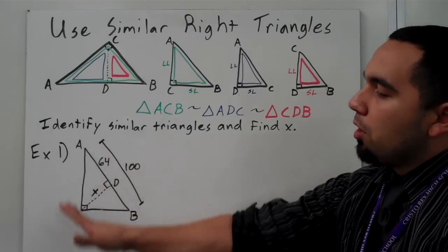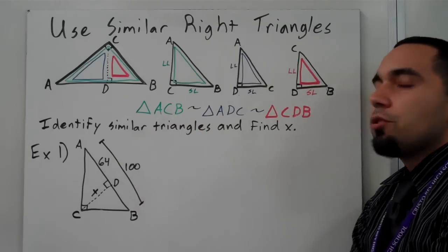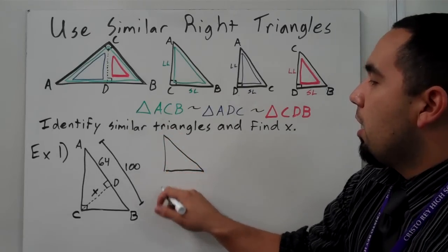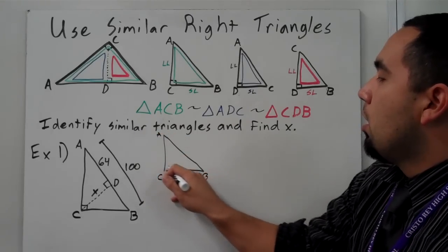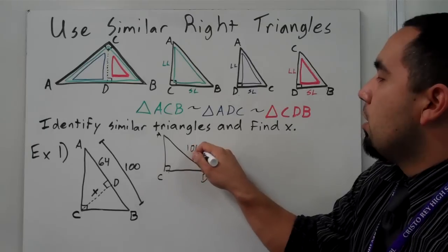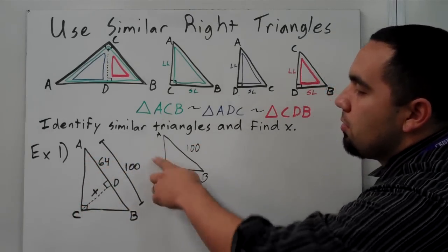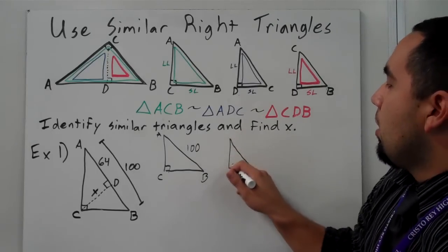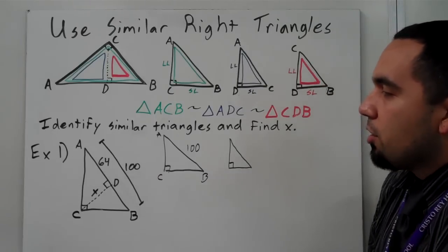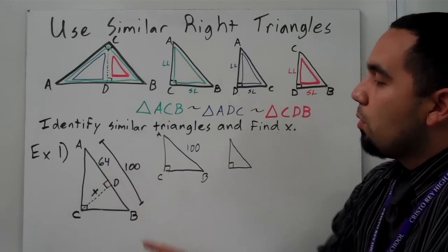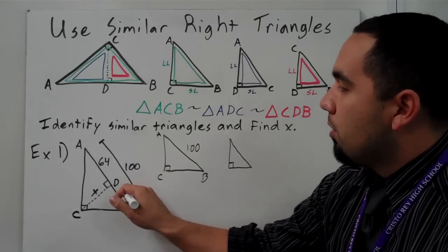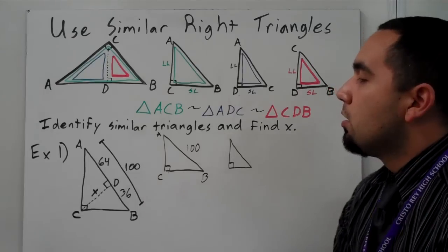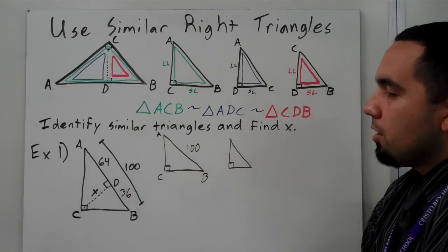The problems are going to look like this — you see one triangle. This problem says identify similar triangles and find X. First, right off the bat, I'm going to draw my three triangles and redraw triangle ACB. I know that this side is 100, and I don't know the other two sides, so I'll leave those blank. I also have another triangle here. The hard part is identifying the long legs and short legs. I can tell that if this one is 64 and the hypotenuse is 100, this must be 36.